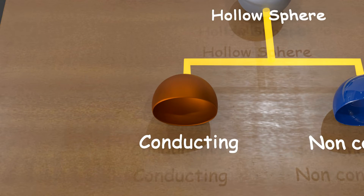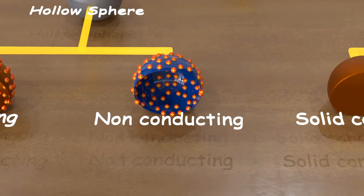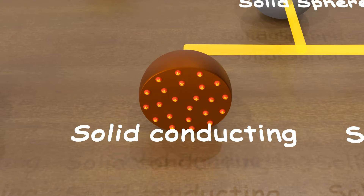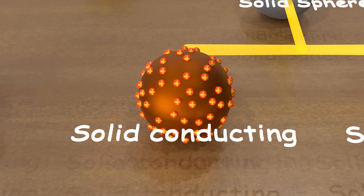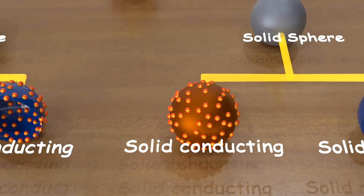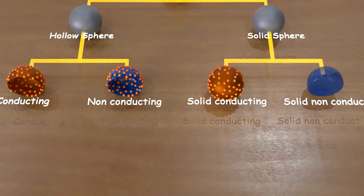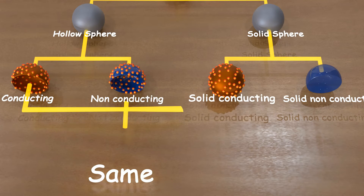In a metallic hollow sphere, charges will reside on the surface, and the same applies to the non-metallic hollow sphere. In a solid conducting sphere, charges repel and accumulate on the surface. This implies that for electric field and potential, the formulas and derivation will be exactly the same for conducting hollow spheres, non-conducting hollow spheres, and conducting solid spheres.